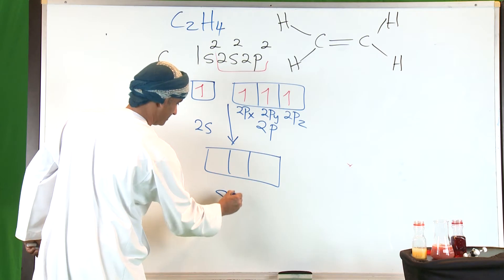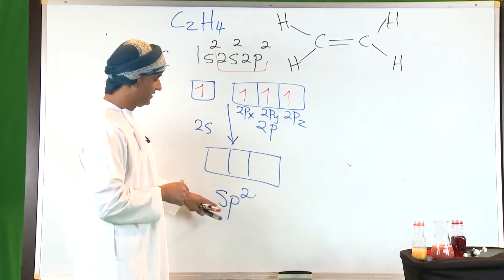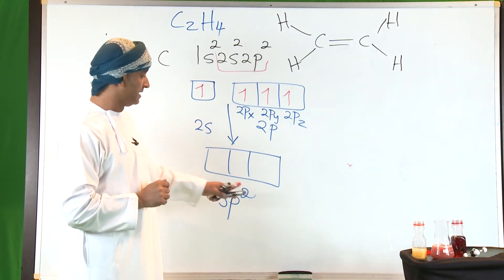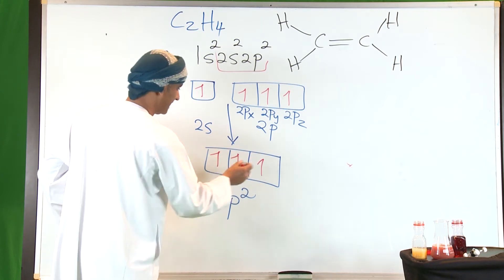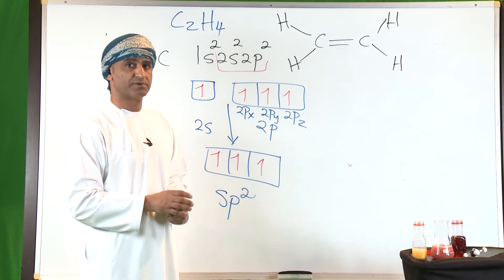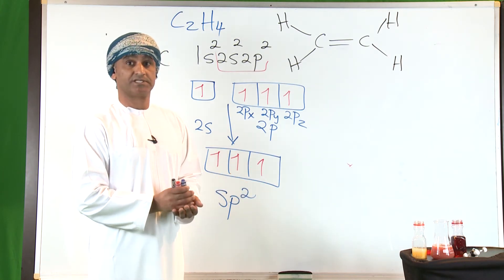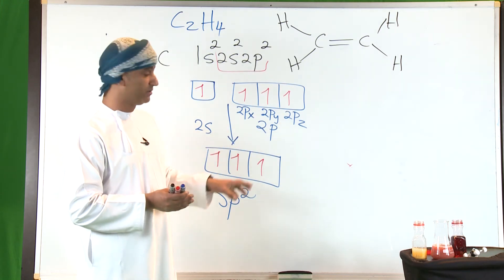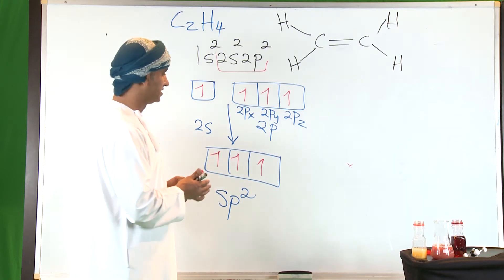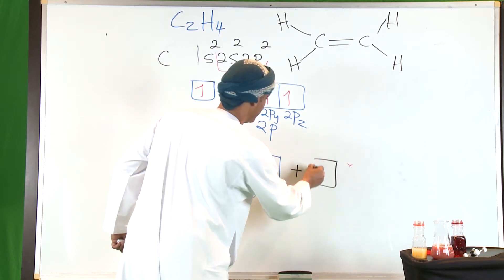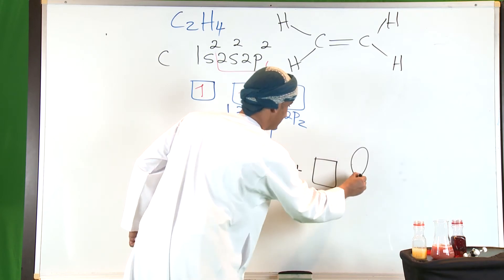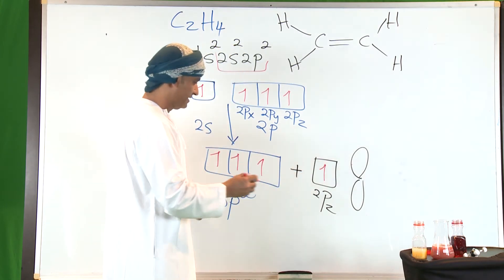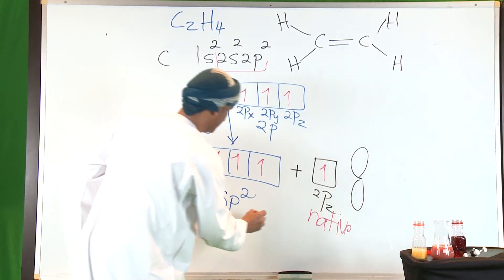These sp² hybrid orbitals are obtained as a result of mixing — or hybridizing — one 2s and two 2p orbitals, with an unpaired electron in each of them. The hybrid orbitals are intermediate in characteristics between those of s and p orbitals. The 2pz orbital is left unmixed, or unhybridized, so it remains a native p orbital — native in shape and energy.